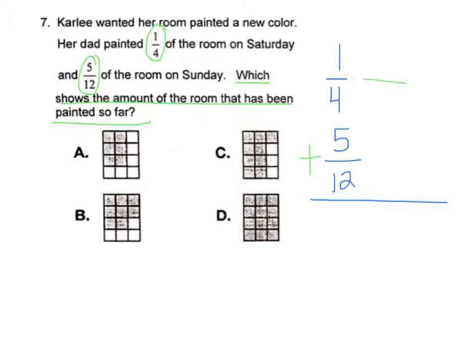Our common denominator between 4 and 12, we could use 12 and that would be times 3 times 3 giving us 3 twelfths. So then we have 3 twelfths plus 5 twelfths, which is 8 twelfths. And if you look at the pictures, they're each cut into 12 equal sections. So we're looking for the one that has 8 twelfths shaded.